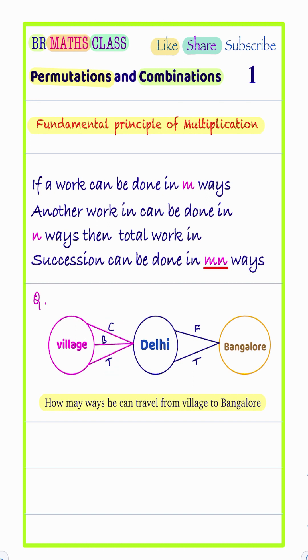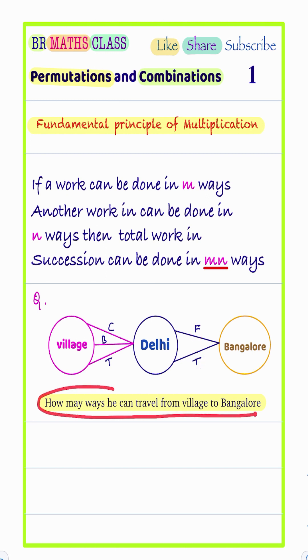From Delhi to Bangalore, he has two modes of transportation. One is he can go by flight, and another one is he can go by train. Now the question is: how many ways can he travel from his village to Bangalore to attend the interview?